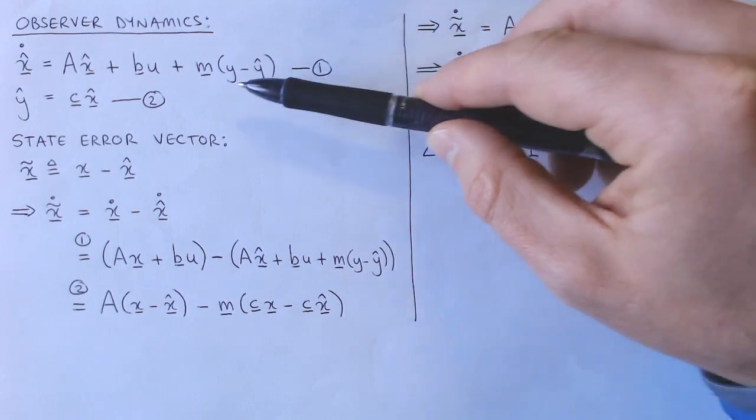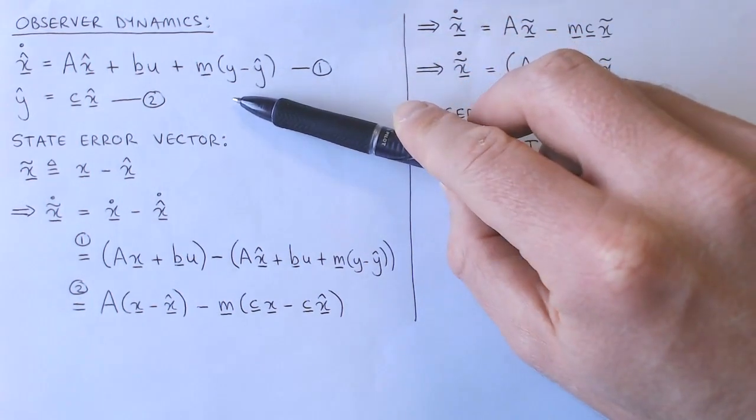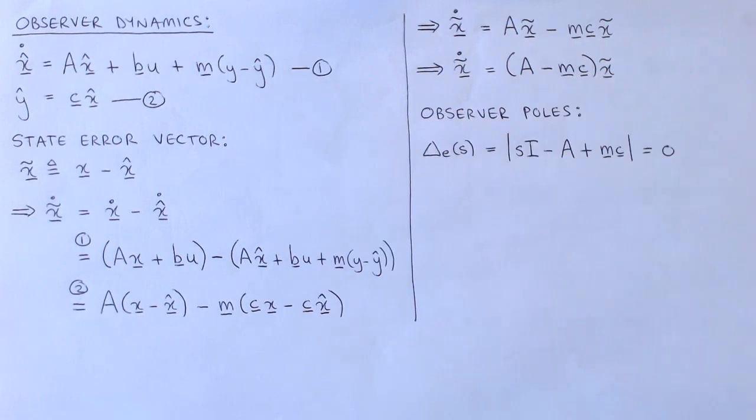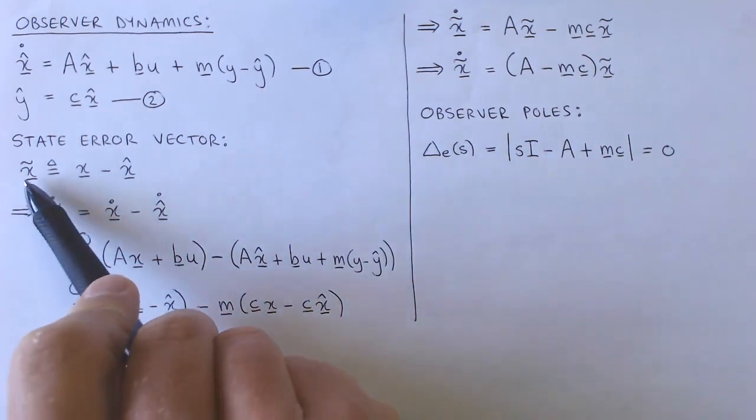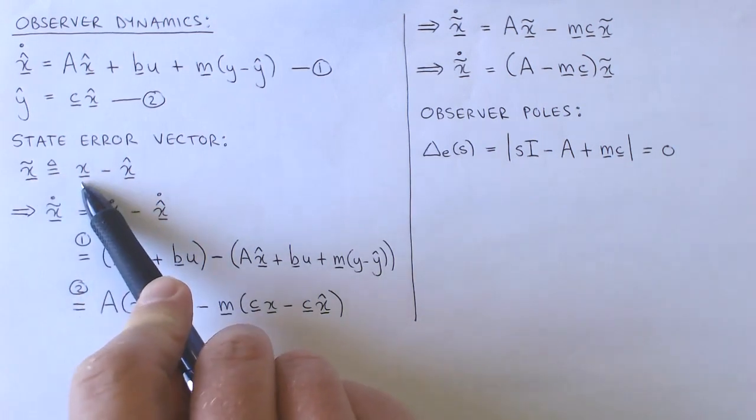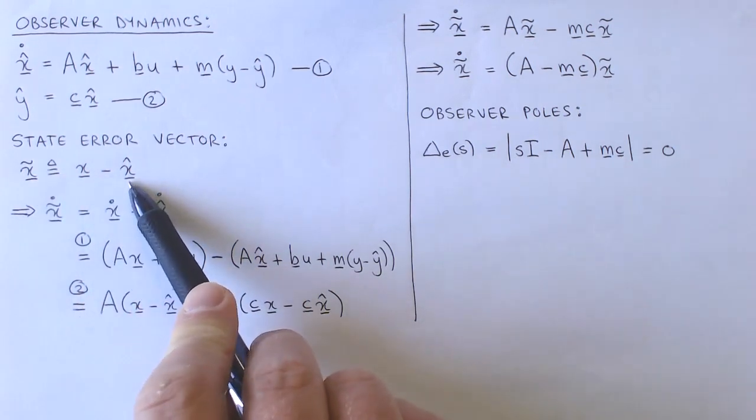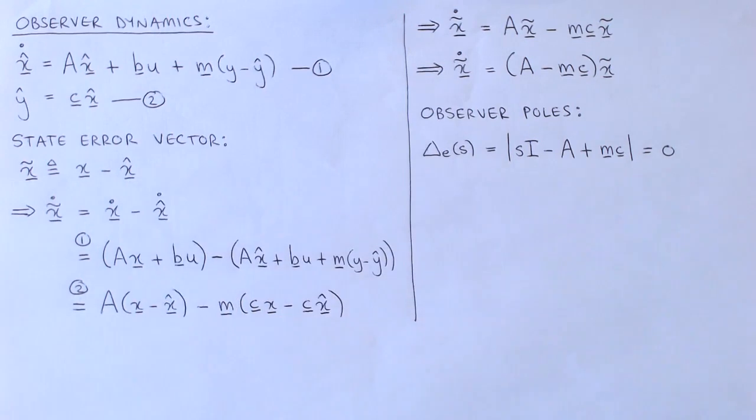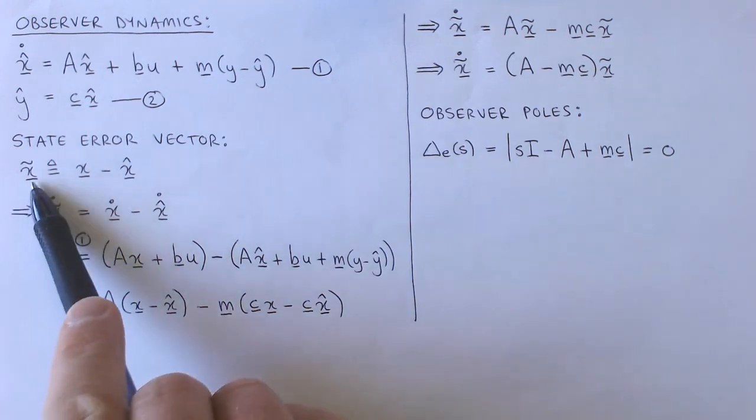Equations 1 and 2 from the previous page are rewritten here. We want the estimated states to be as close as possible to the plant states, and to this end we define the difference between them, or the state error, as X tilde equal to the plant states X minus the estimated states X hat. Our goal is to describe the dynamics of the state error, or informally, how quickly the state error goes to zero. To do this, we first take the derivative of the state error, which is equal to X dot minus X hat dot.